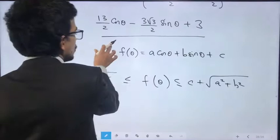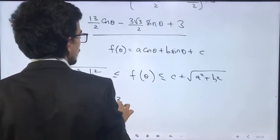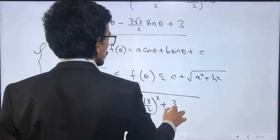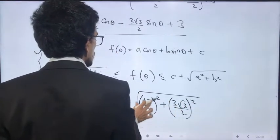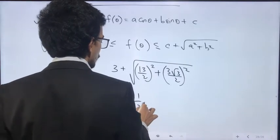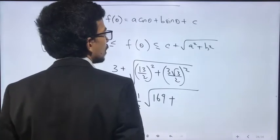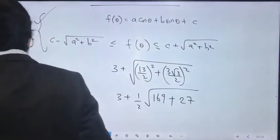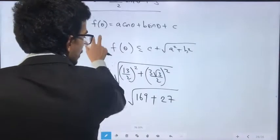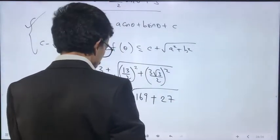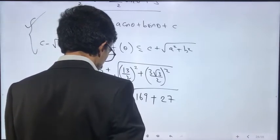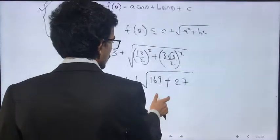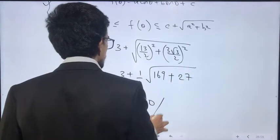Maximum value: 3 + √[(13/2)² + (3√3/2)²]. This becomes 3 + (1/2)√(169 + 27) = 3 + (1/2)√196. This is 7. 7 + 3 = 10.